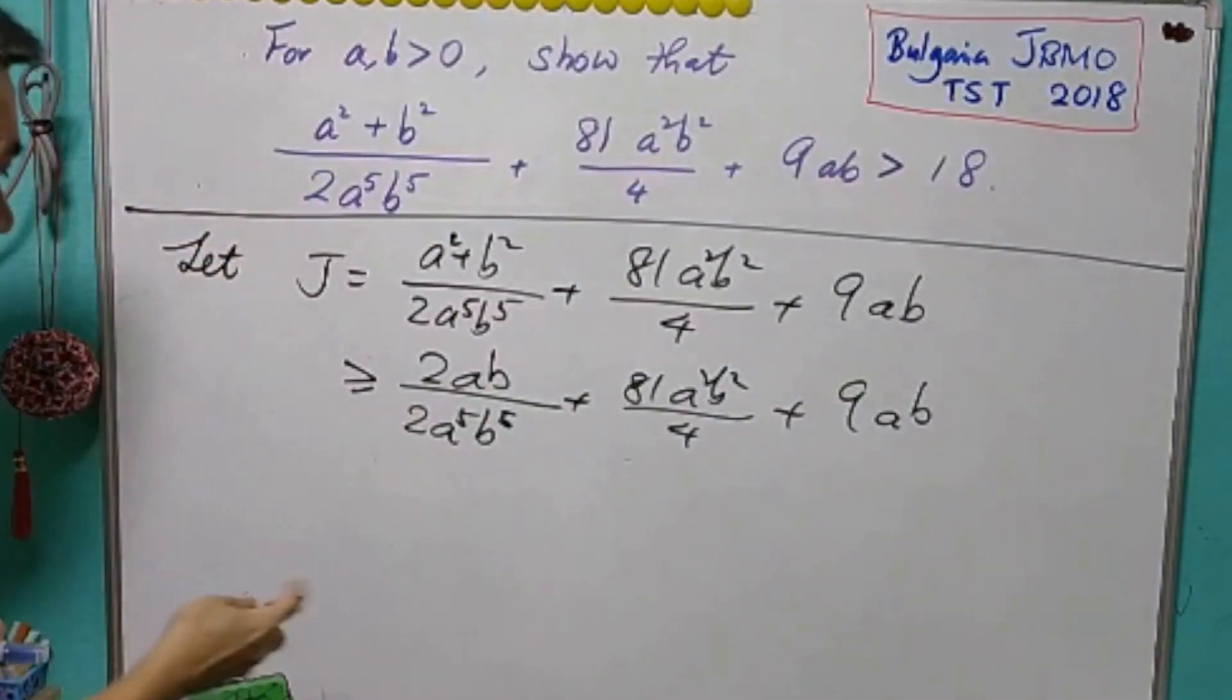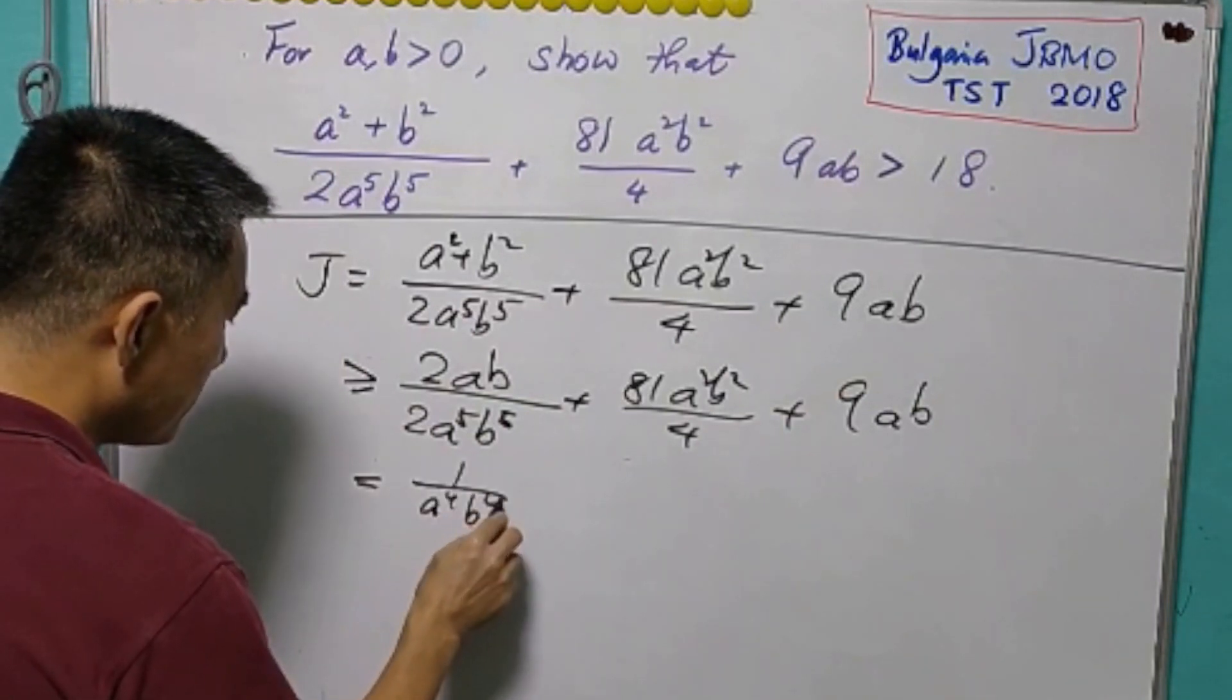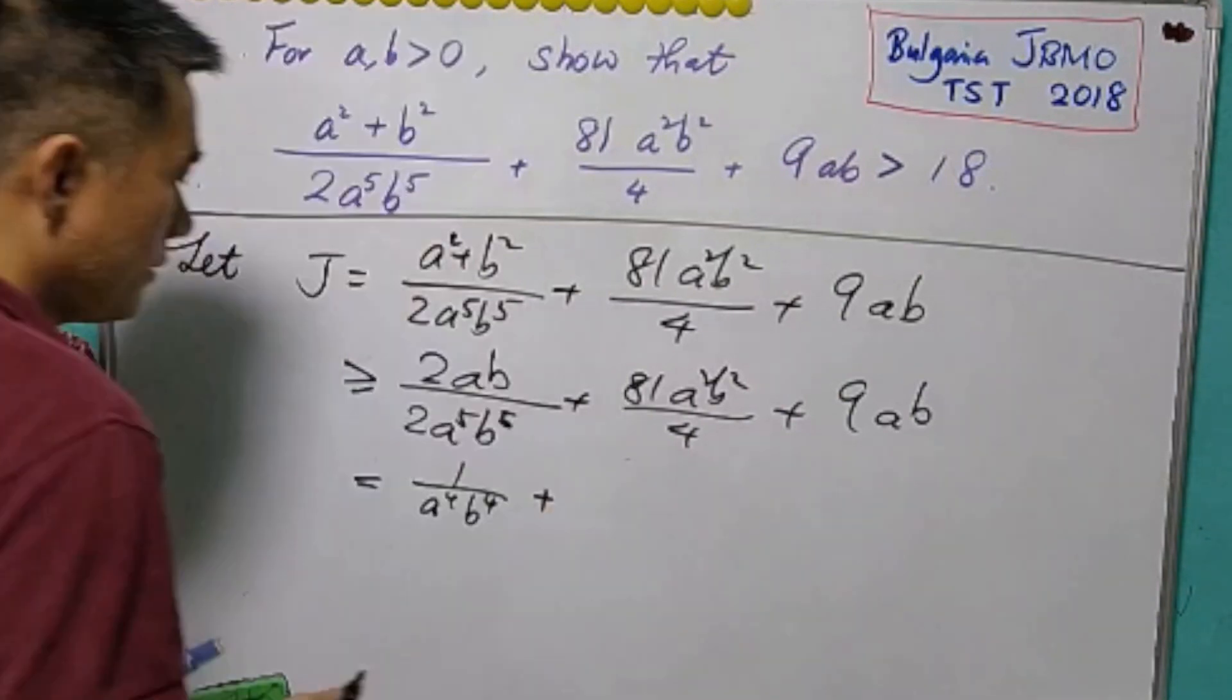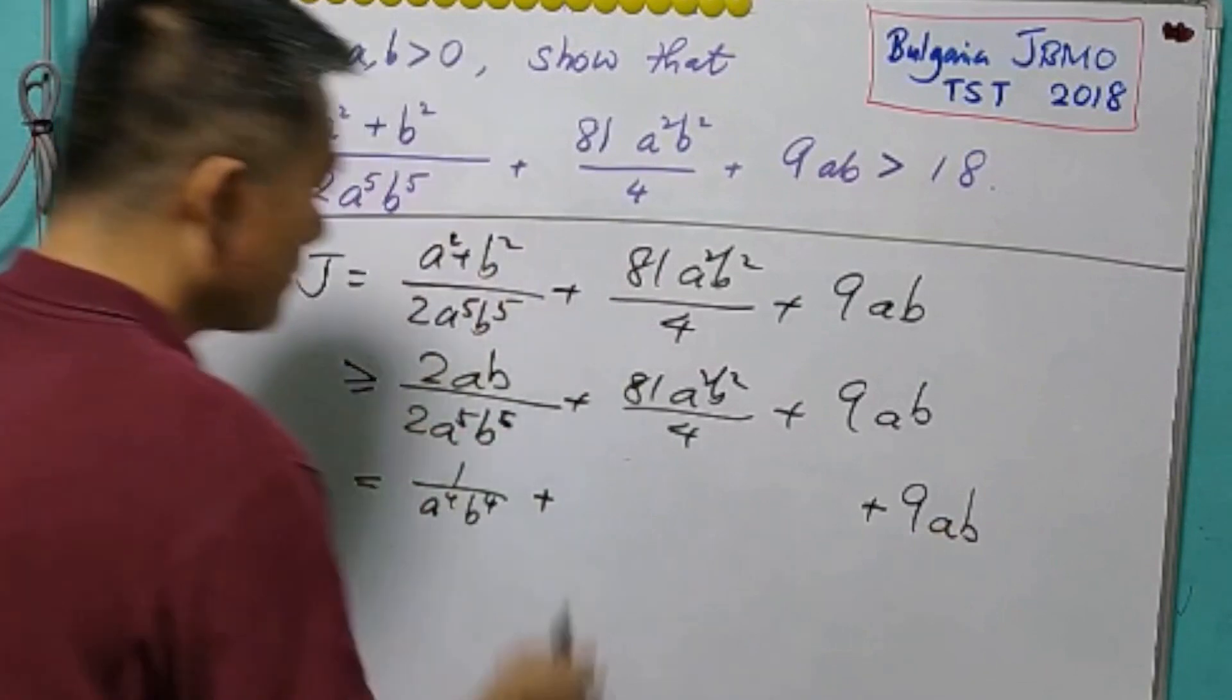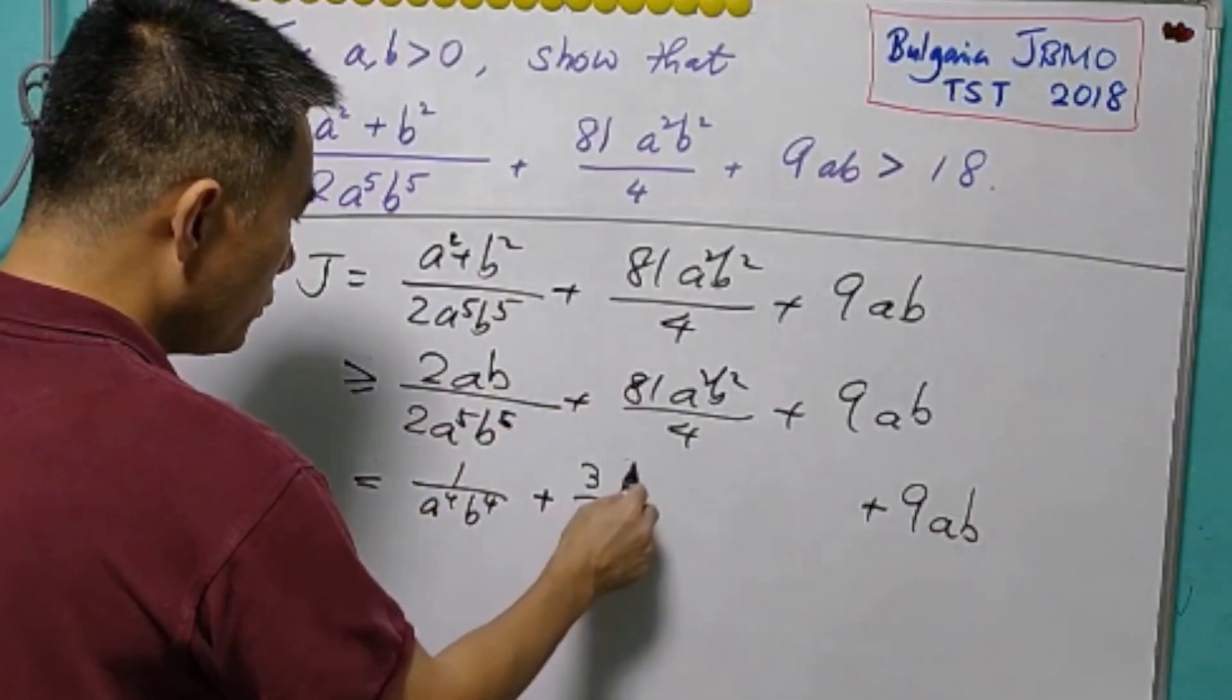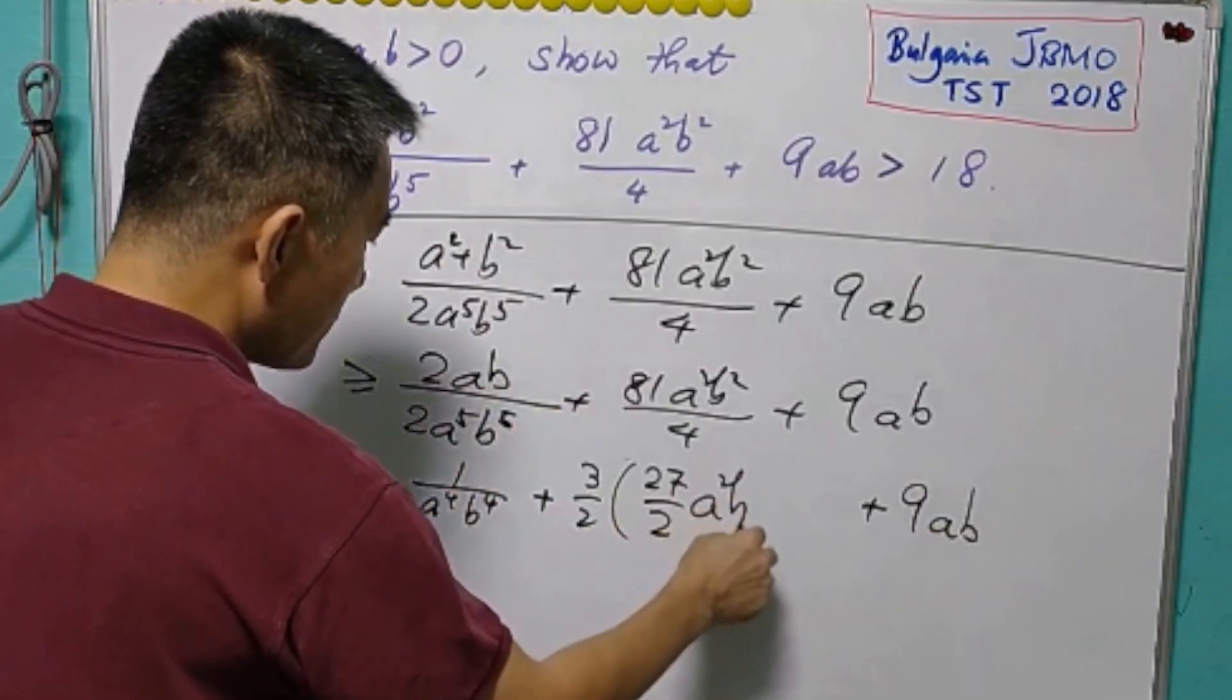Okay, so this will equal to 1 over a⁴b⁴. Now, in this case, 9ab still remains the same. But 81 over 4, I'll write as 3 over 2, 27 over 2, then a²b².